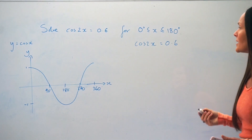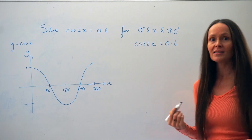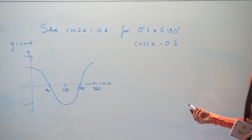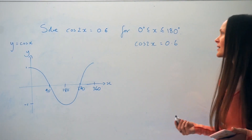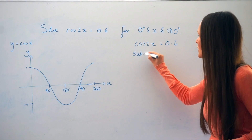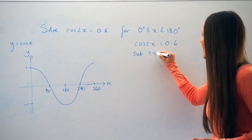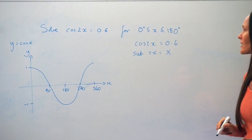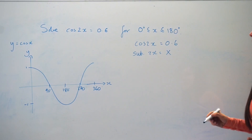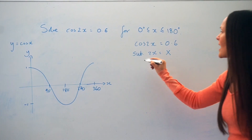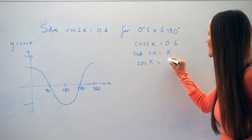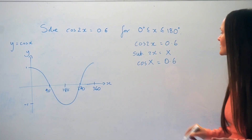I'm going to begin by making a substitution so that I can rewrite this equation in a more familiar-looking way. I'm going to make the substitution 2x = capital X, replacing 2x with capital X. So the equation now looks like this: cosX = 0.6.